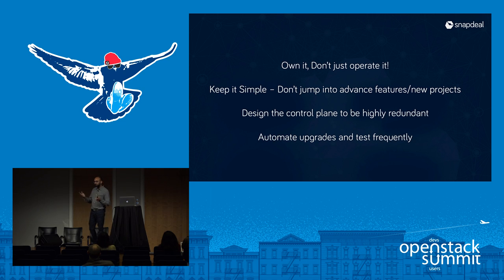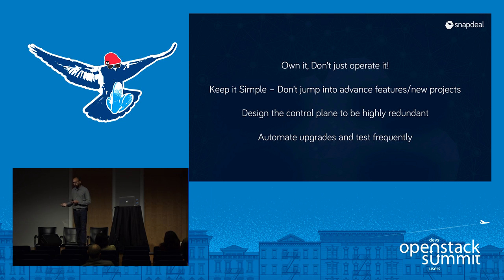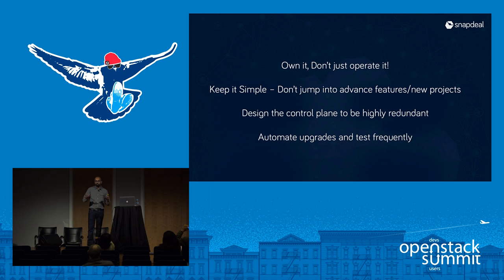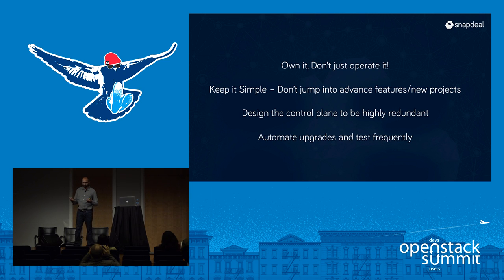What were some key learnings from the last year of migration? First: for OpenStack, own it, don't just operate it. We have deep knowledge of the OpenStack code so that if a problem strikes at 2 AM, we are able to go in, debug it, fix it, and patch it ourselves. Our entire business depends on it. That's a key learning for anyone using OpenStack in production — you have to really own it. It's your code, your software; you can't point fingers at anyone.